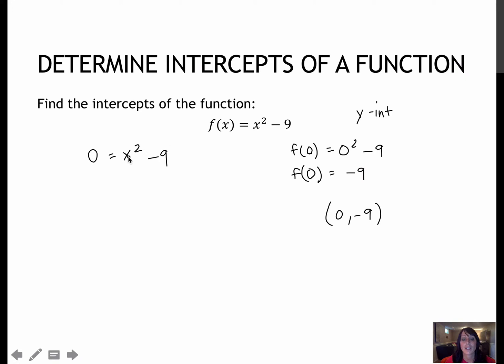For my x-intercept, I would add the 9 to each side, so 9 equals x squared. I would take the square root to get plus or minus 3. So for my x-intercepts, I'm going to have negative 3 comma 0, and positive 3 comma 0. So there are two of them. For my y-intercept, I will just have 1 at 0 comma negative 9.